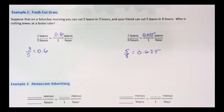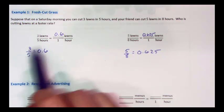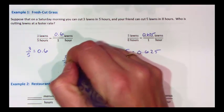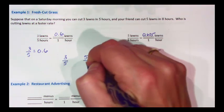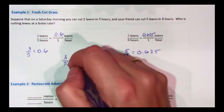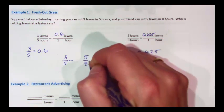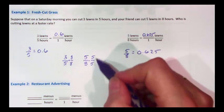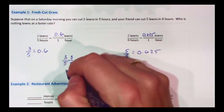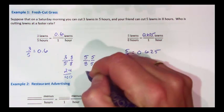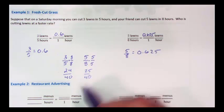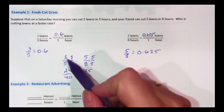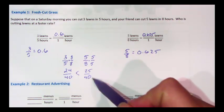In order to find out who is faster, we need to compare three-fifths of a lawn per hour to five-eighths of a lawn per hour. When we compare fractions, the easiest way to do this is to convert to common denominators. We multiply both fractions by one, but we choose the version of one that has the other denominator. So this is twenty-four-fortieths, and this is twenty-five-fortieths. Once we have the same size pieces, we can see that twenty-four-fortieths, or three-fifths, is smaller than twenty-five-fortieths, or five-eighths.